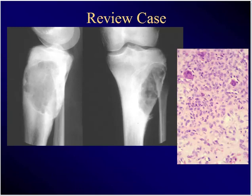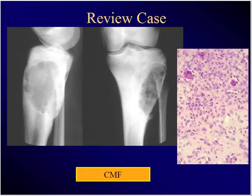Large proximal tibial lesion with this histopath — this is a tough one, but it was actually one of the questions. What is this? Eccentric, destructive — it's not a non-ossifying fibroma, clearly. What's the diagnosis? CMF — chondromyxoid fibroma. Remember: proximal tibia, eccentric, with giant cells, myxoid background, and stellate cells. This wasn't the histopath I would have chosen, but it was the one selected for that particular case review.